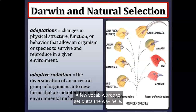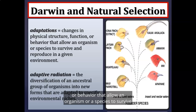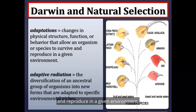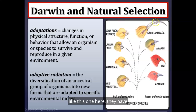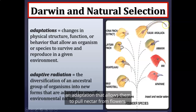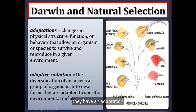A few vocabulary words: adaptations are changes in physical structure, function, or behavior that allow an organism or species to survive and reproduce in a given environment. In the finches, we see different beak sizes. Finches with long skinny beaks can pull nectar from flowers, whereas finches with short stout beaks can break open seeds.